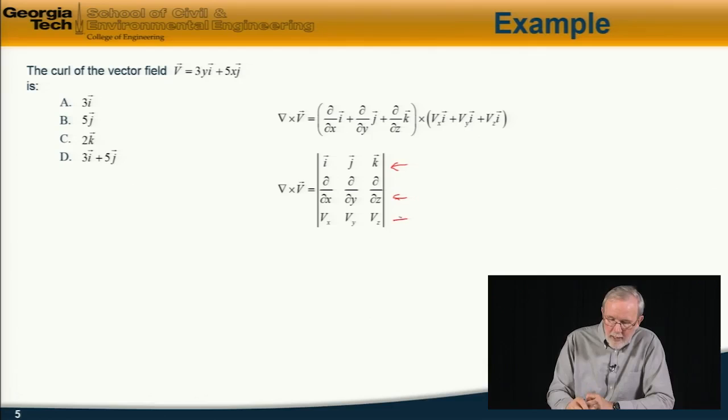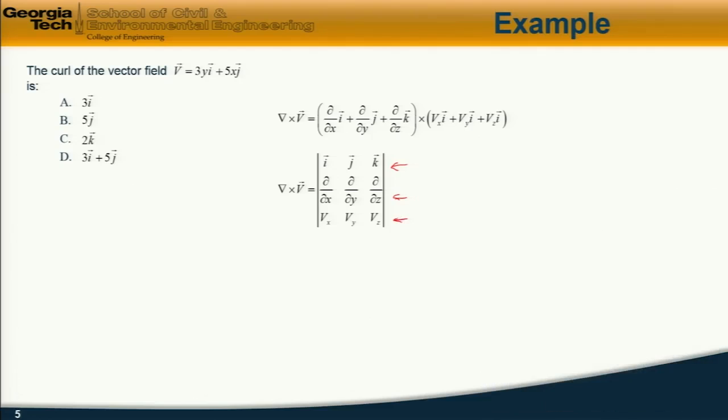So this is most easily computed by means of the determinant. So we write this as a determinant with the unit vectors in the top row, the operators in the second row, and finally, the vector field, the components of the vector field in the third row.